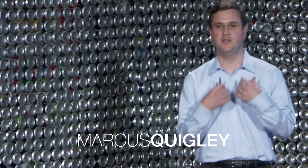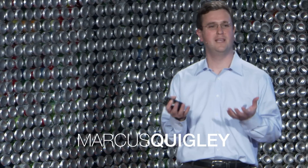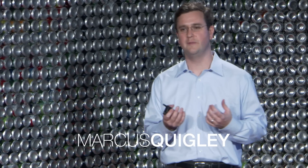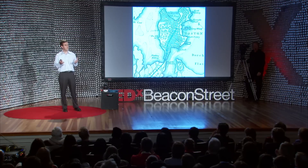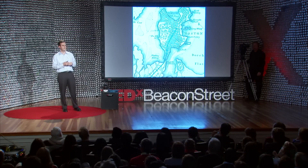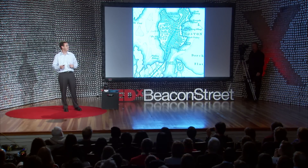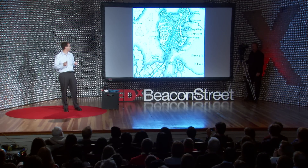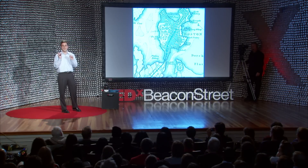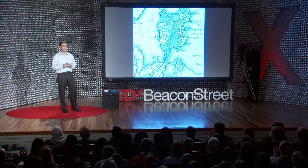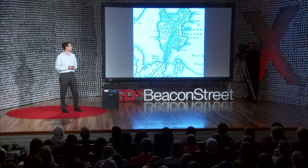I wanted to start out by having you imagine what it might look like to be in Boston Common in the late 1700s. If you stood looking west, out toward Cambridge, you would see a very different scene than you see today — salt marshes, mud flats, you'd be standing amongst cows. But even at that point, there had been significant changes to the estuary, major changes to the water resources.